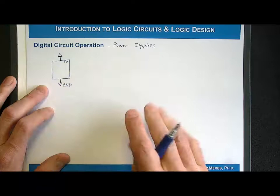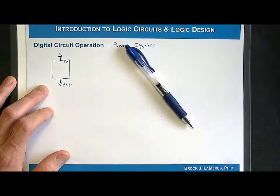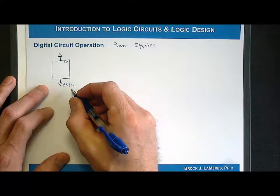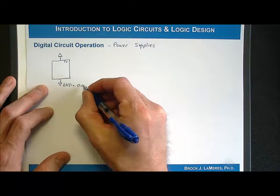We are only going to focus on digital circuits that use a single power supply and a single ground, and that will simplify operation. That's predominantly how digital circuits are designed these days when you look at a single gate. Ground is a theoretical infinite source of electrons that will not develop a voltage, so we can always assume that ground is at zero volts.